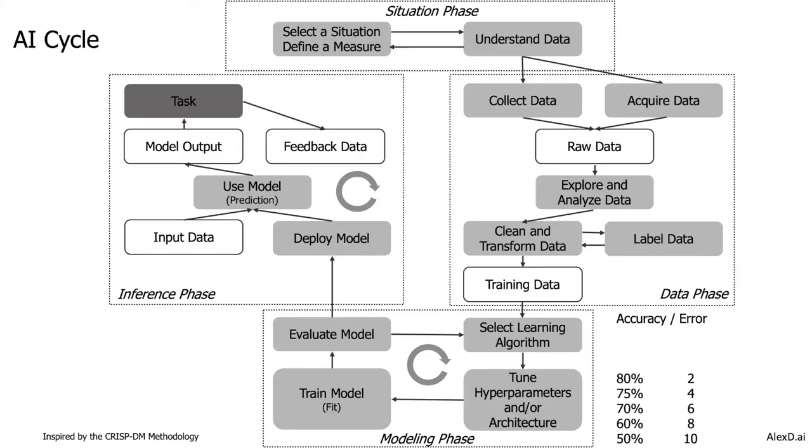The next phase is the inference phase. Now your models are in production and you will use them in the real situation, in the real world. You deploy your model and then you use it to predict an output, to predict a result using your input data. It is important to say that the input data should be in the same distribution as the training data.